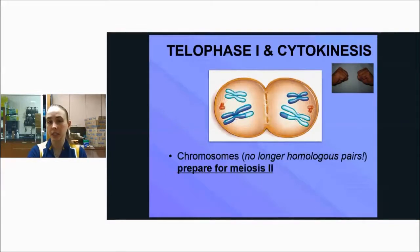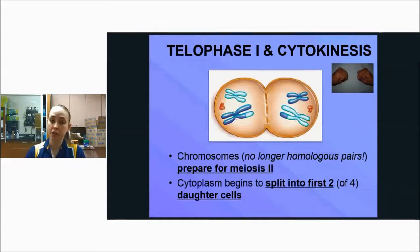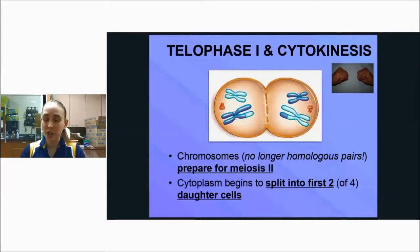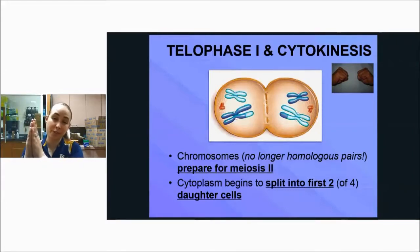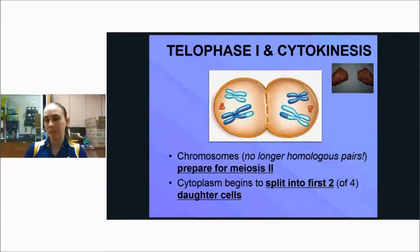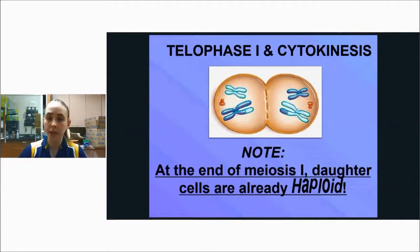In telophase one and cytokinesis, the cells prepare for meiosis two: the cytoplasm splits and nuclear envelopes form. At the end of telophase one, the cells are already considered haploid because you've split up the homologous pairs. Splitting those homologous pairs means you no longer have one copy from mom and one from dad — you just have one set of all 23 chromosomes plus a duplicate copy so it can split into another cell. At the end of meiosis one, daughter cells are already haploid because homologous pairs were separated.